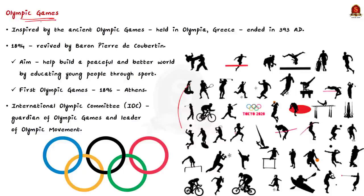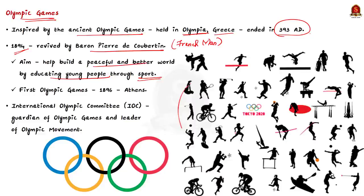This is why this topic is important for us. Now, let us begin the discussion. Olympic Games is inspired by the ancient Olympic Games that was held in Olympia city of Greece. It is said to have ended in 393 common era. But then in 1894, it was revived by a French man called Baron Pierre de Coubertin. The aim was to help rebuild a peaceful and better world by educating young people through sport. So, the first Olympic Games of the modern era was held in 1896 in Athens.